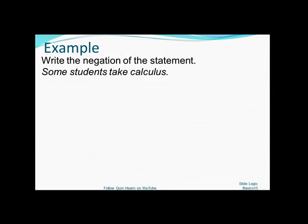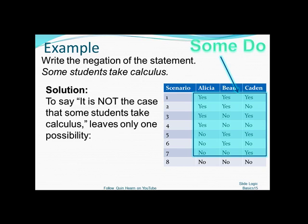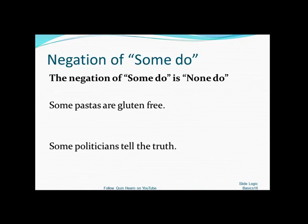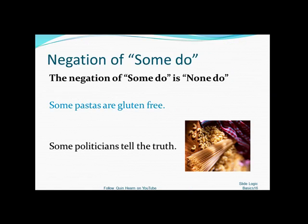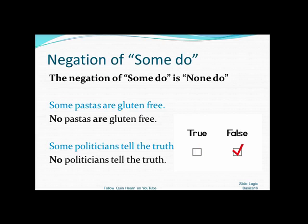Going back the other way: if the original statement is 'Some students take calculus,' that covers the first seven scenarios where at least one student takes calculus. The only remaining possibility is the opposite: 'No students take calculus.' So the negation of 'some do' is 'none do.' For example, if someone said 'Some pastas are gluten-free' and you disagreed, you'd say 'No pastas are gluten-free.' And if someone said 'Some politicians do tell the truth,' to negate that you'd say 'No politicians tell the truth.'